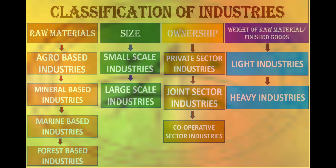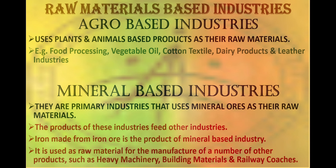Now there are different types of industry; one can easily classify them on different bases like raw material, on the basis of size, on the basis of ownership, and on the basis of weight of raw material or finished goods. On the basis of raw material there are four major types of industry. First, agro-based, which uses plant and animal based products as their raw material. Example: food processing, vegetable oil, cotton textile, etc.